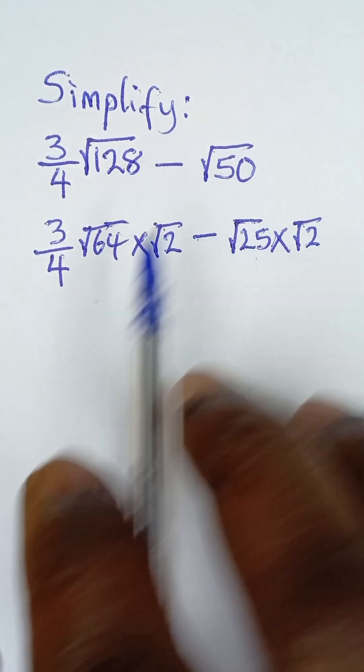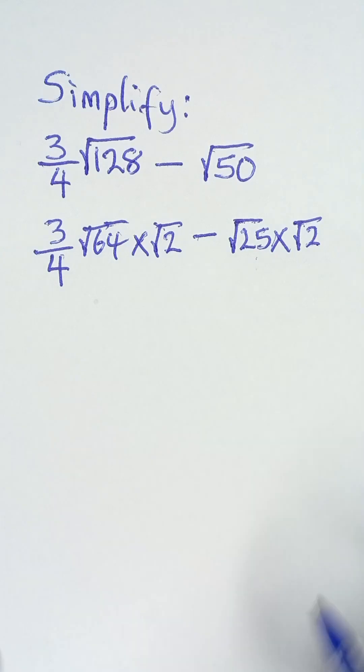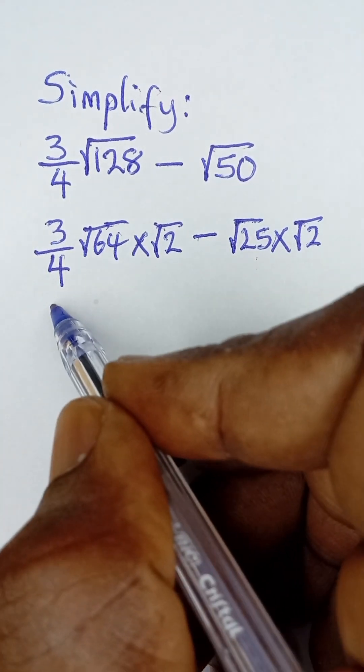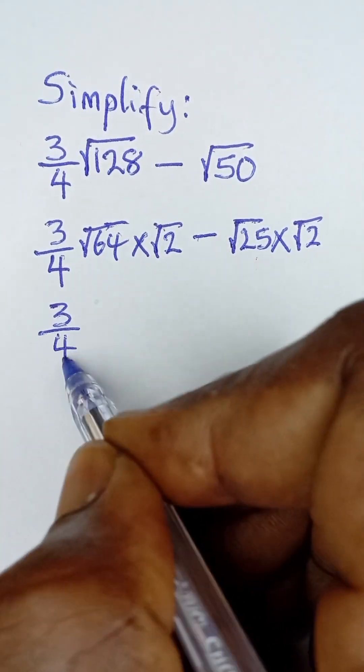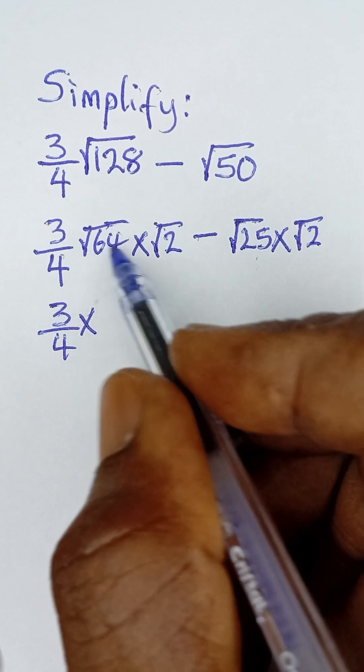25 times 2 is 50, 64 times 2 is 128. Now we go further to say 3 over 4 multiplied by the square root of 64 is 8, and then multiplied by root 2, and then minus...